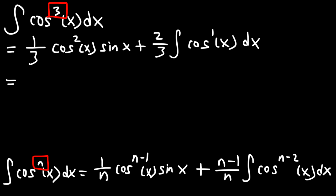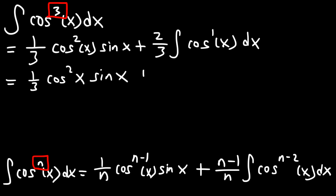So we have 1 over 3 cosine squared times sine x, plus 2 over 3 times the integral of cosine x dx. The integral of cosine is sine. You can leave your answer like this, but what I'm going to do is adjust it — I'm going to replace cosine squared with 1 minus sine squared.